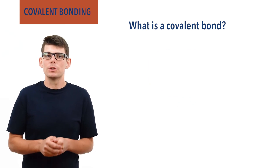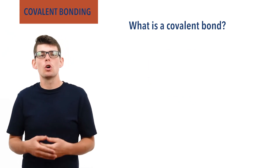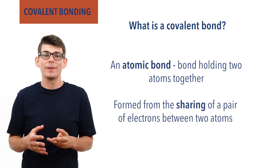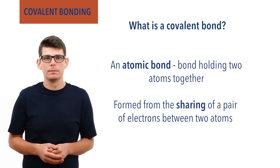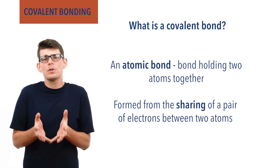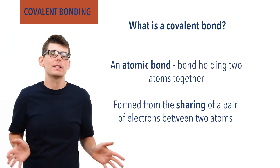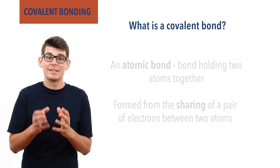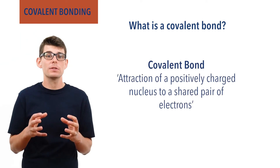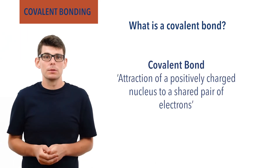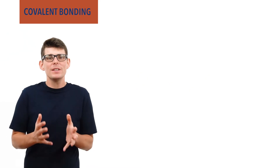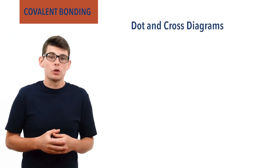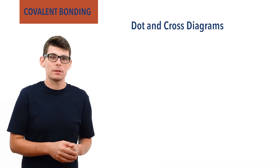Covalent bonds hold atoms together and are an example of an atomic bond. A covalent bond is formed by the sharing of a pair of electrons between two atoms. More precisely, a covalent bond is the attraction of two positively charged nuclei to a shared pair of electrons. To make things easier when showing covalent bonds, we use dot and cross diagrams to show how an electron pair is being shared between two atoms.